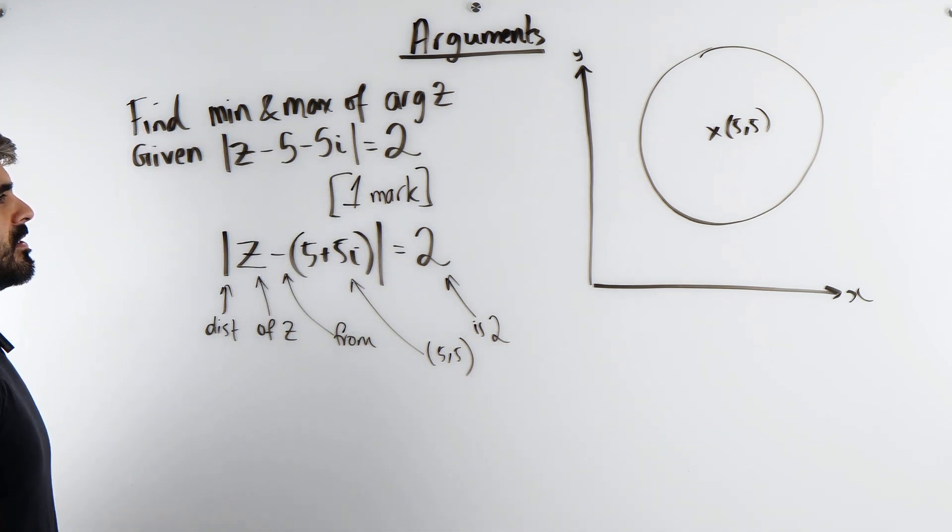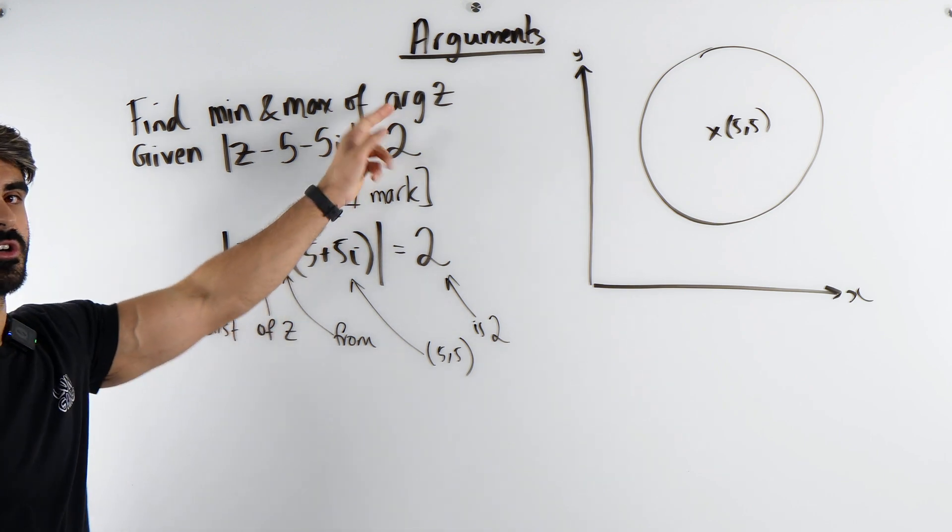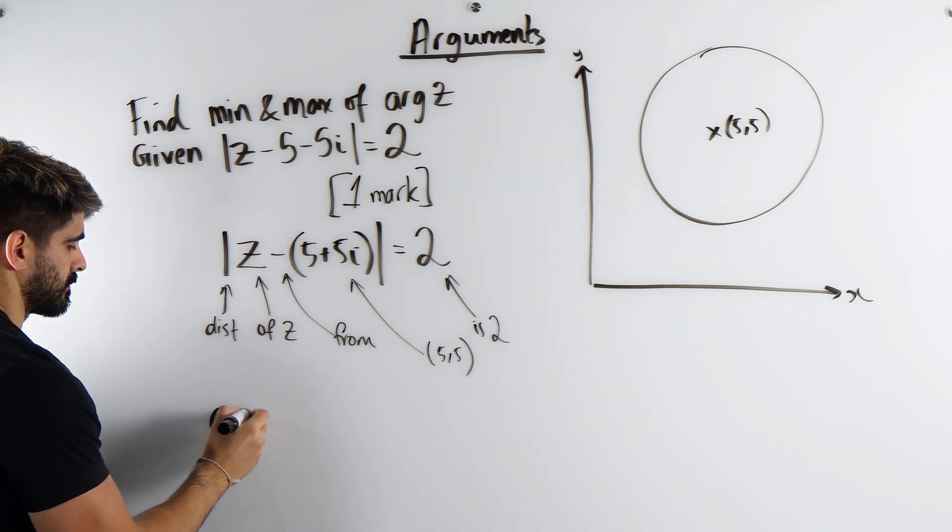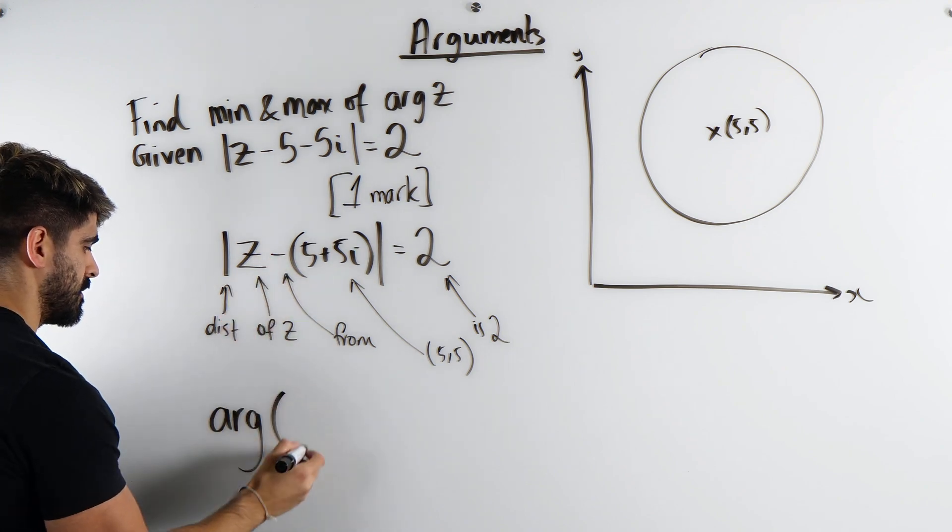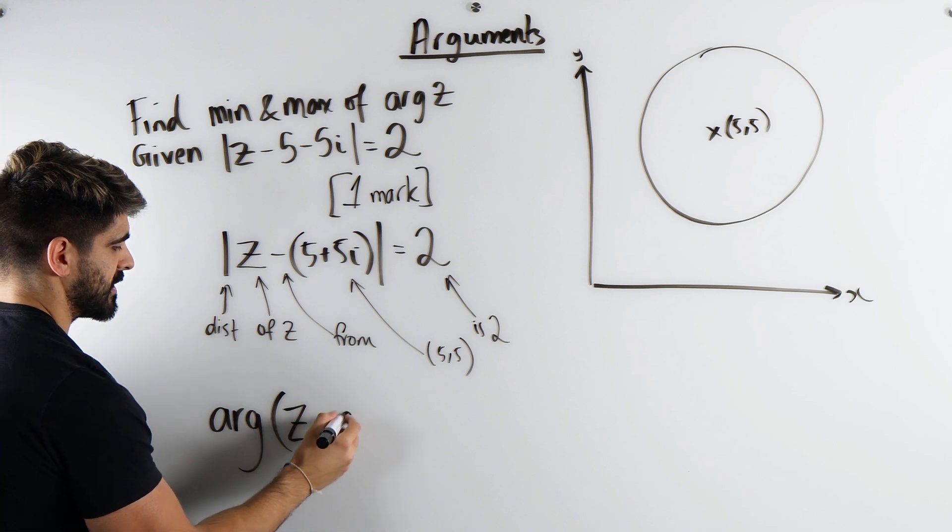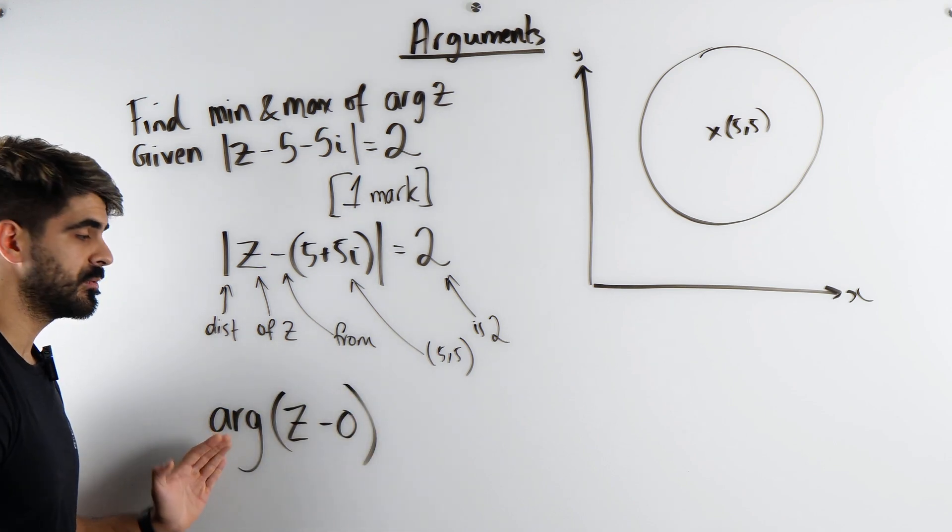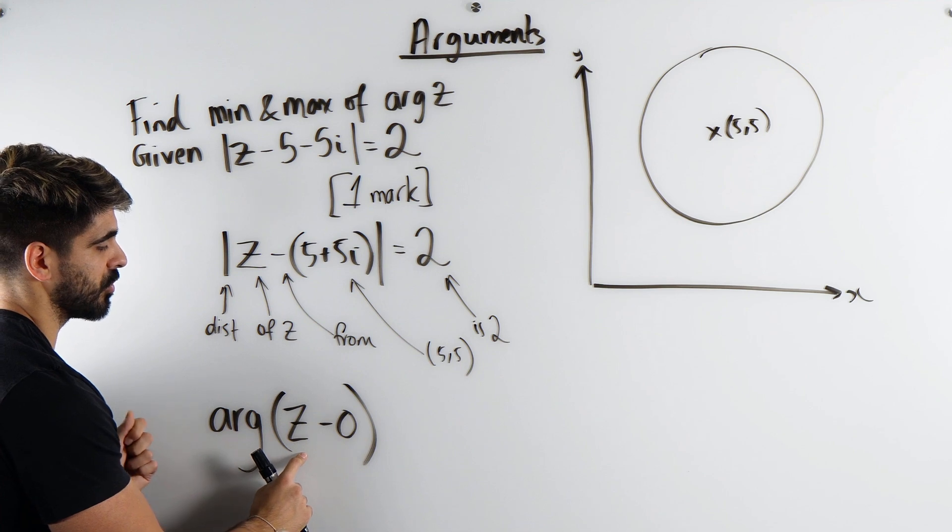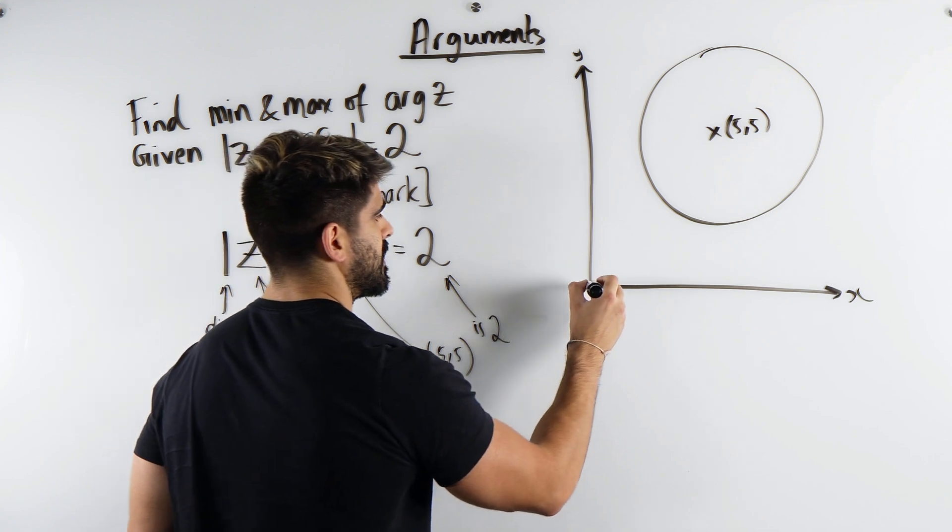Now what does it mean to find the minimum and maximum value of arg z. What that means is we need this from, it's the arg of z minus 0 technically. So it's the angle that the point z makes if you draw a line to the origin. So z from the origin. The origin is here.